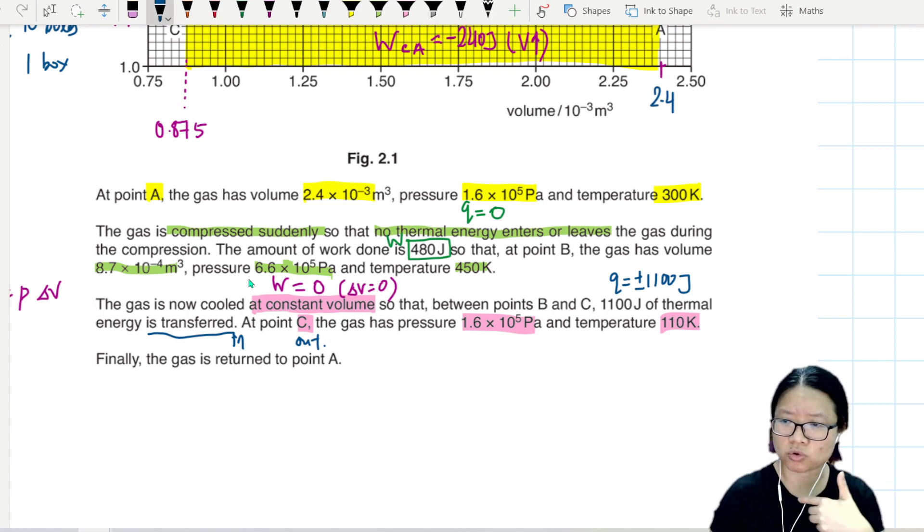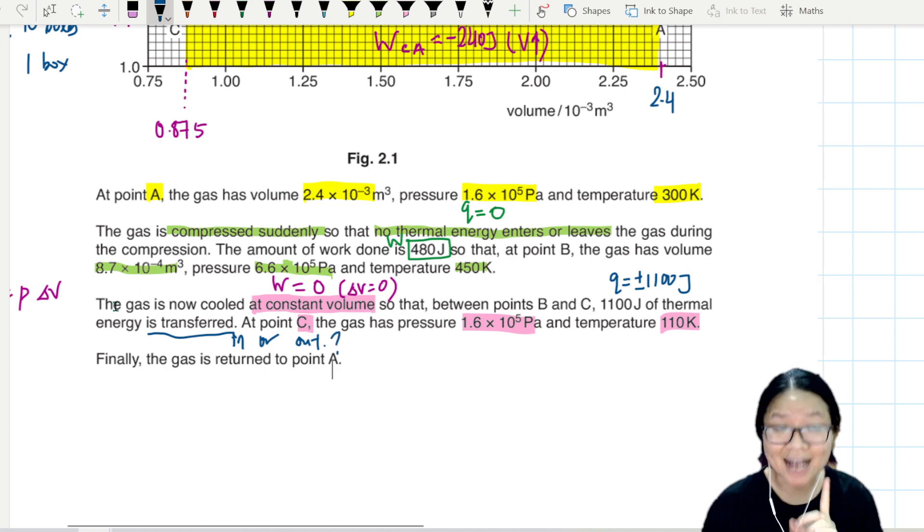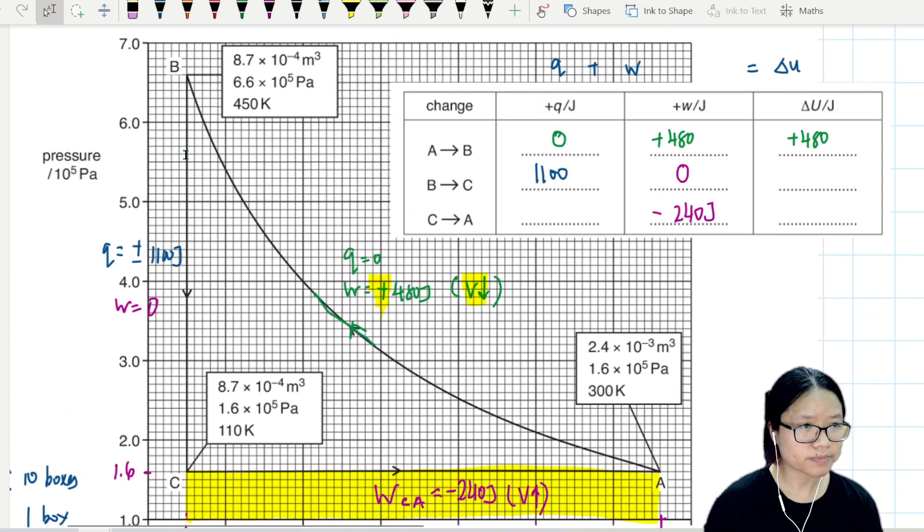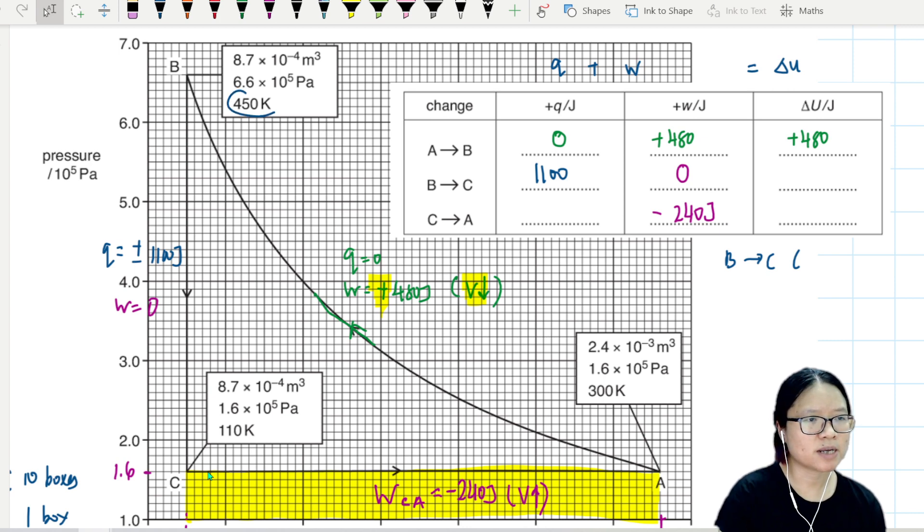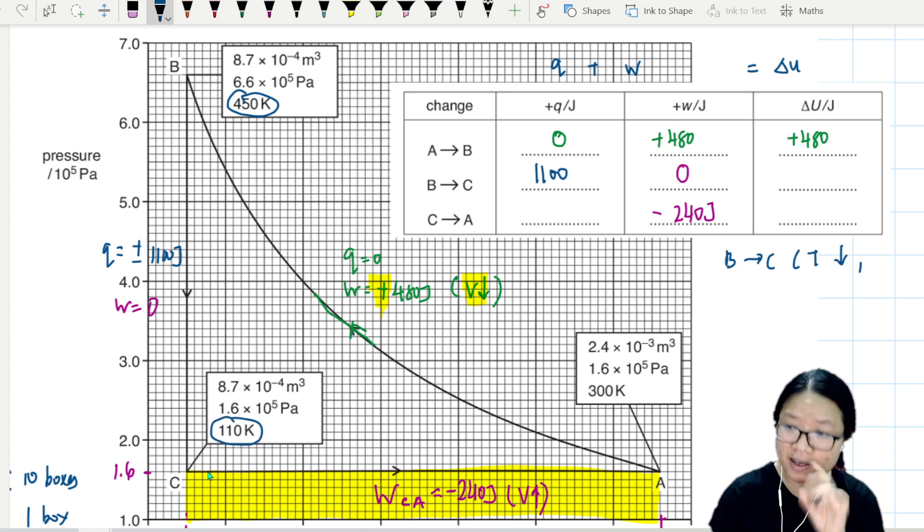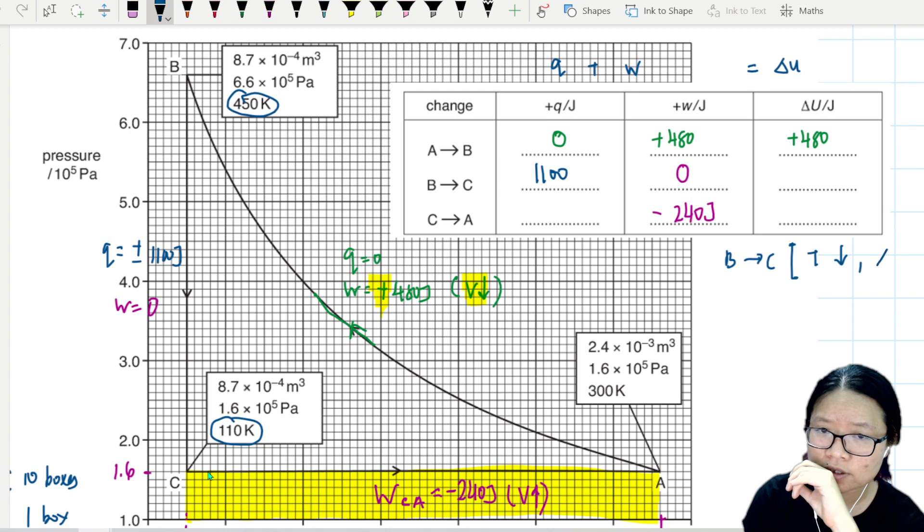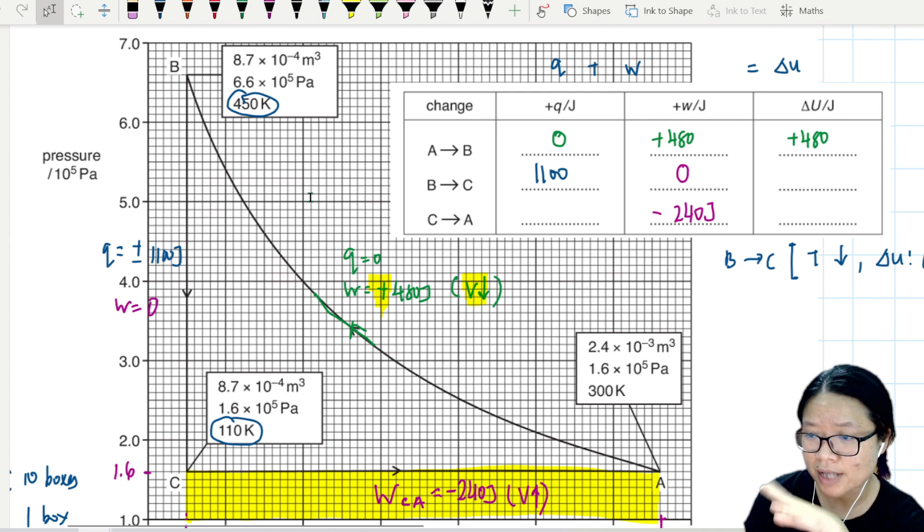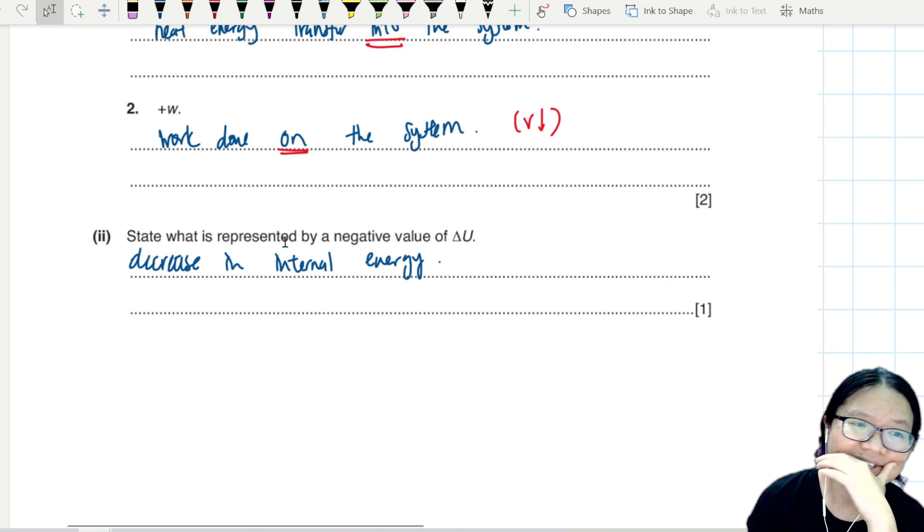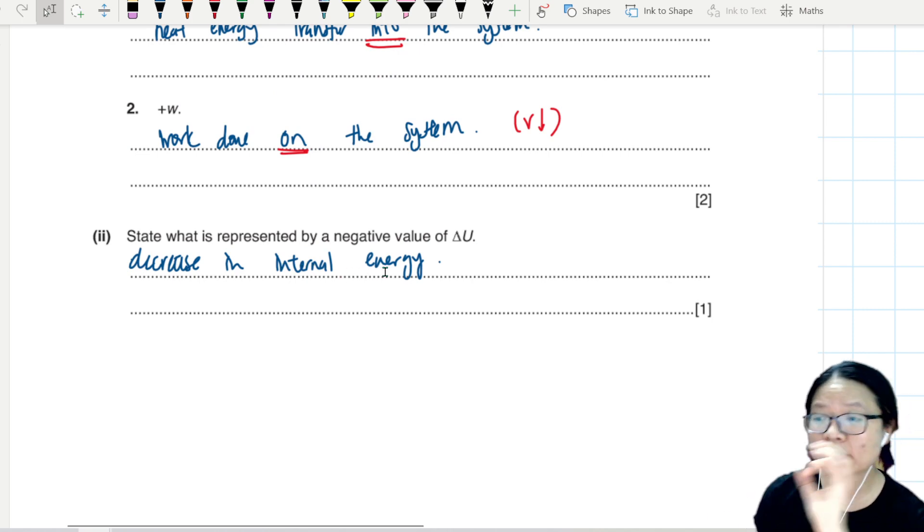Transfer or out of my class, or into my class, I don't know. So we need to get other clues. Let's check out this one. From B to C, I'm gonna write the clues here. From B to C, I notice that the temperature decreases. Temperature has dropped from 450 to 110. T decreases. If temperature decreases, what can I, because I probably need to ask delta U. What is the change for delta U? So if the temperature decreases, what happens to the internal energy? Internal energy decreases, becomes negative. And you know what's the plot twist? The question actually tells you here what is represented by a negative value of delta U: decrease in internal energy.